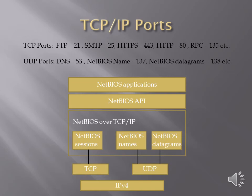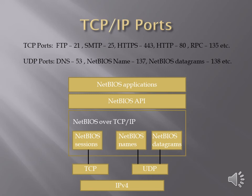TCP IP ports are required whenever devices communicate with each other and the user expects a response from the server. If a user is sending files from one device to another using FTP, port number 21 must be open for transferring the data. Likewise, for sending mail, SMTP port 25 must be open in the firewall at both locations. For example, if host A is in location 1 and host B is in location 2, and host A is transferring files to host B, the port number must be open in the firewall at both locations, whether it is a TCP or UDP port.